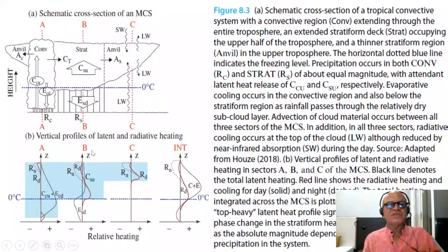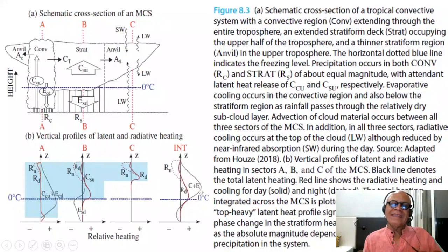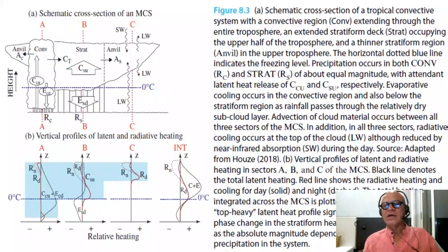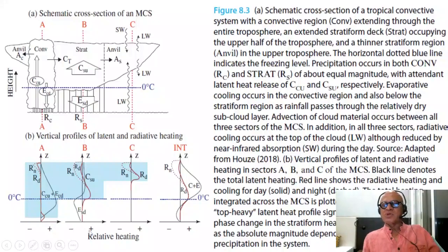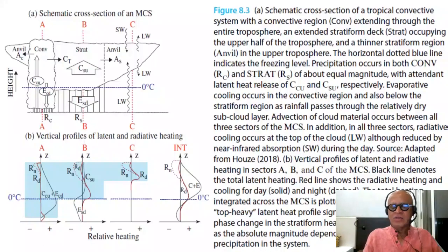If you integrate over a whole mesoscale convective system, you see the daytime and nighttime radiative heating balance alongside the convective and evaporative heating processes. This produces the top-heavy heating structure that we implicitly used for forcing waves, and now we can see where it actually comes from. The rainfall processes that reach the surface, the radiative processes, and the convergence and evaporation all contribute to a surface heat flux exchange signal at the bottom.